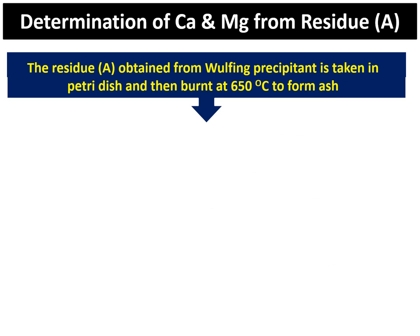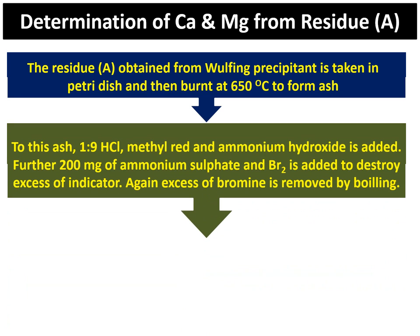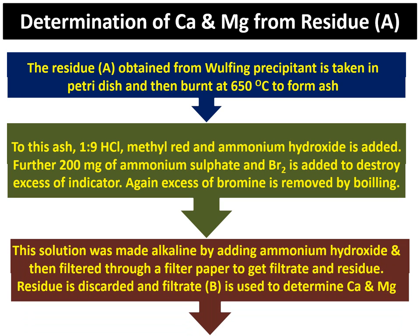Next, we will see the determination of calcium and magnesium from Residue A. The residue A is taken in a petri dish and burned at 650 degrees centigrade to form ash. To this ash, 1:9 HCl, methyl red and ammonium hydroxide are added. Then 200 mg of ammonium sulphate and bromine are added to destroy the excess indicator, and the excess bromine is removed by boiling. The solution is made alkaline by adding ammonium hydroxide and filtered through filter paper to get a filtrate and residue. The residue is discarded and the filtrate, known as Filtrate B, is used to determine calcium and magnesium.